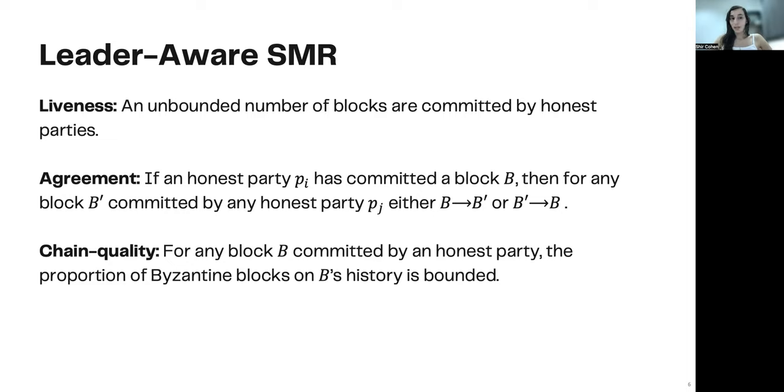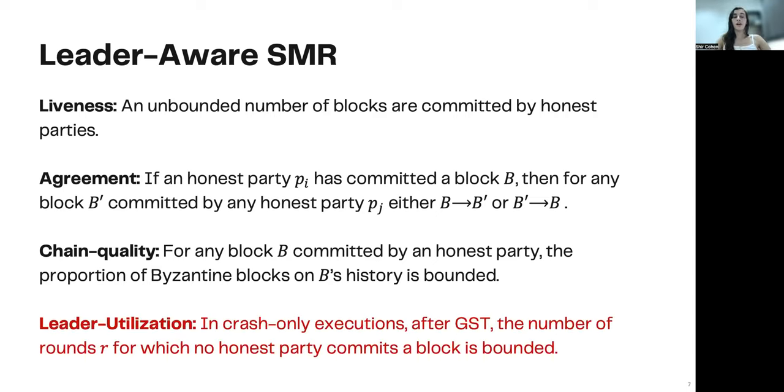For chain quality that we mentioned, we say that for every block b committed by an honest party, the proportion of Byzantine blocks on b's history is bounded. And finally, a new property that reflects the main motivation of this work. The motivation is to improve the latency in the common case without Byzantine parties, but possibly with slow parties. We call this property leader-utilization, and it states that in the crash-only executions, the common case in real life, after GST, the number of rounds for which no honest parties commits a block is bounded.